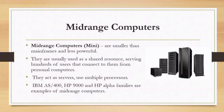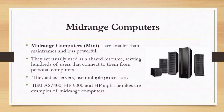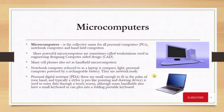Mid-range computers, or minicomputers, are smaller than mainframes and less powerful. They are usually used as a shared resource serving hundreds of users who connect to them from personal computers. They are found inside one company and serve several hundred people. They use multiple processors. IBM AS/400, HP 9000, and HPL families are examples of mid-range computers.